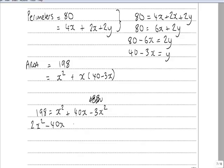Minus 40x plus 198 equals 0. I can immediately divide through by 2 giving me x squared minus 20x plus 99 is equal to 0.